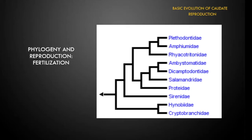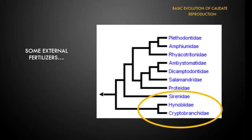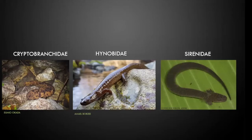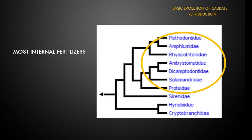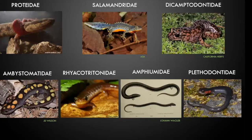The key difference across reproductive phylogeny is fertilization. The most primitive animals are external fertilizers: the cryptobranchids — your hellbenders and giant salamanders — the hynobiids, which are your Asiatic salamanders, and the sirens. Sirens have some other strange reproductive adaptations, but we'll lump these three together for now. These three families are external fertilizers.